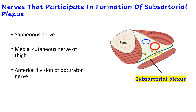The subsartorial plexus lies just beneath the sartorius muscle and is formed by contributions from three nerves: the saphenous nerve, which is the cutaneous branch of the femoral nerve; the medial cutaneous nerve of the thigh, again a branch of the femoral nerve; and the anterior division of the obturator nerve. These nerves form a plexus and supply the medial aspect of the thigh.